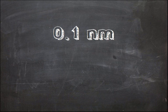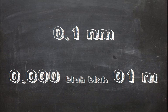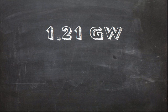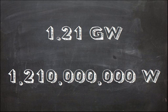What's it all for then? Well, it's easier to say the average size of an atom is 0.1 nanometers, instead of writing out 0.0000000001 meters. What about saying the energy needed to send a DeLorean into the future is 1.21 gigawatts, instead of saying 'Marty, you need 1,210,000,000 watts of power for your motor.'